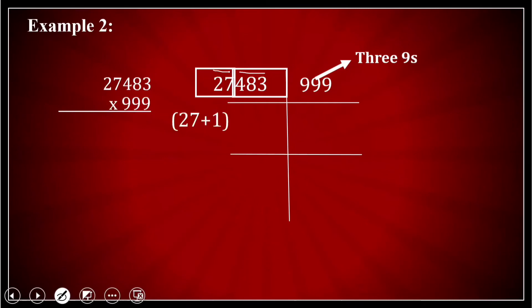27 what we'll do? 27 add 1 to it and 483 subtract 1 from it. 27 plus 1 is 28. I write 28 over here and 483 minus 1 is 482. I write it over here. I subtract 9 minus 2 is 7. 9 minus 8 is 1. 9 minus 4 is 5. So I get 5, 1, 7 over here.